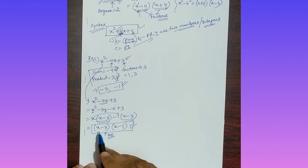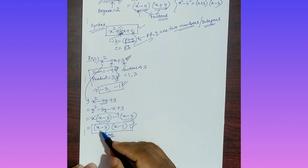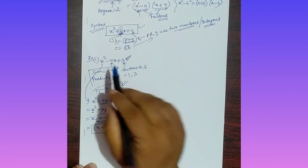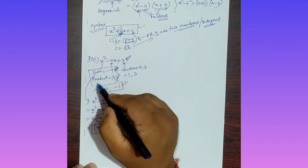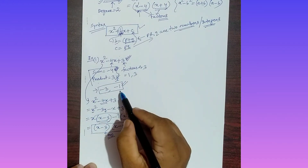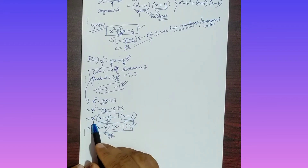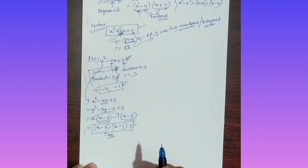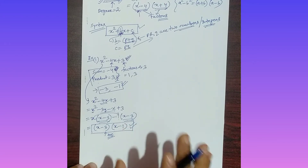So x - 3 is a factor of this polynomial and x - 1 is also a factor. To recap: for x² - 4x + 3, find two numbers whose sum is -4 and product is 3 — those are -3 and -1. Split the middle term, take common factors, and you get (x - 3)(x - 1).